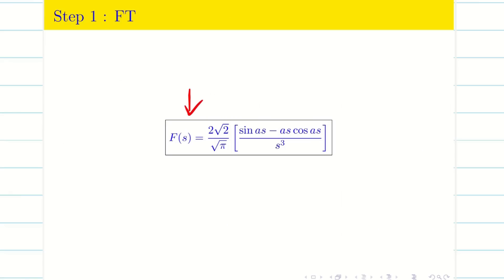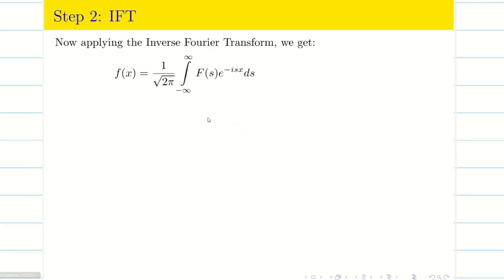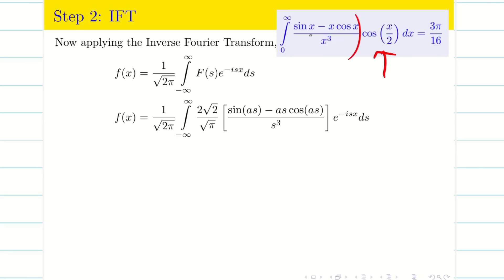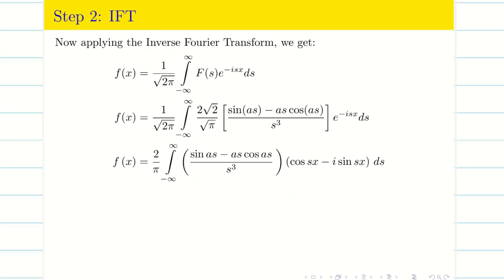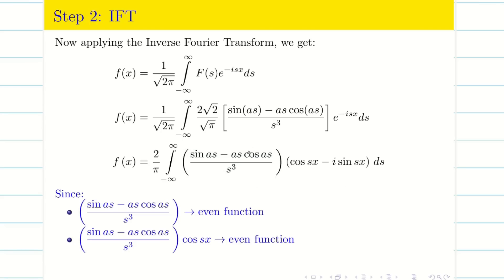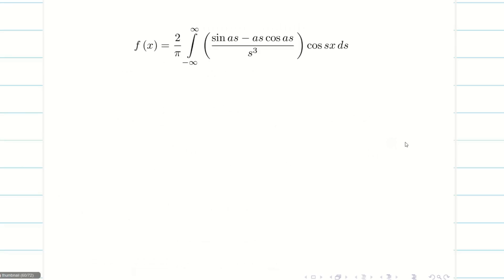From the previous problem we get the same F(s) since the function is the same and only the deduction differs. Taking the inverse Fourier transform and expanding e^(-isx) = cos(sx) - i·sin(sx): F(s) is even, cos(sx) is even so their product is even, and sin(sx) is odd so the second product is odd and equals 0. We keep only the cos(sx) term and write it as 2·(2/π)^(1/2) times the integral.